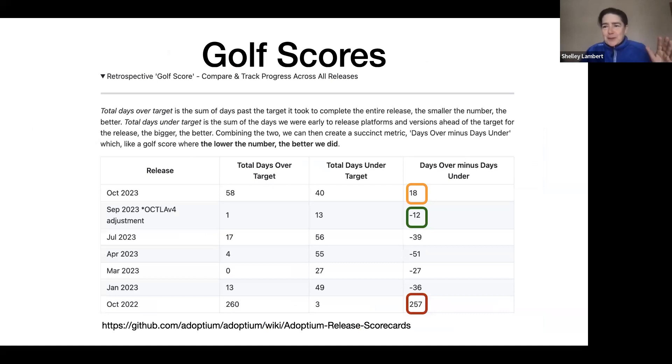But before we all doom and gloom it for October, I do want to say I actually think it's incredible what happened. The team was able to still have a decent score. And I call these the golf scores, they're found at the release scorecards page with a link below. But given what we were then, the golf scores we were producing in 2022 versus the golf scores we produce today, there's been a great improvement in our ability to meet any challenge that comes our way and overcome them. So I do want to shout out, this is not a doom and gloom, this is actually a celebration of what happened in September and October given the challenges that were faced.